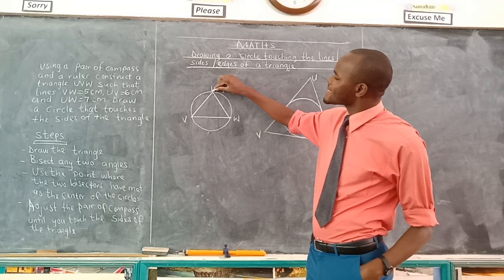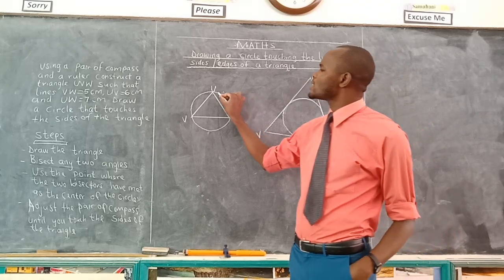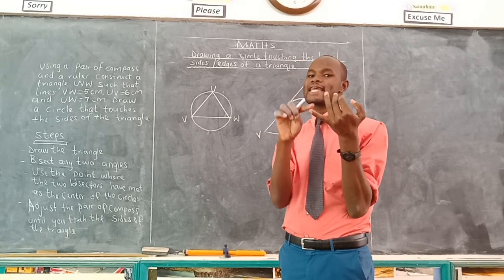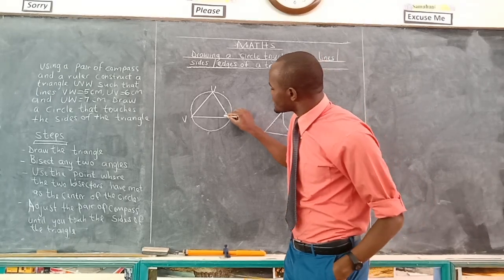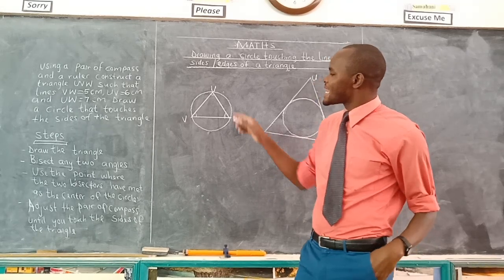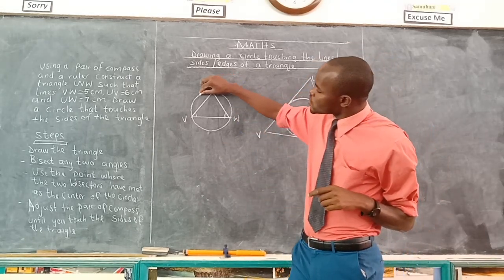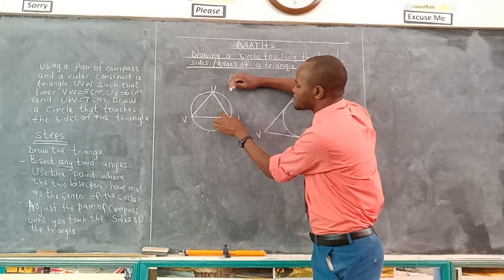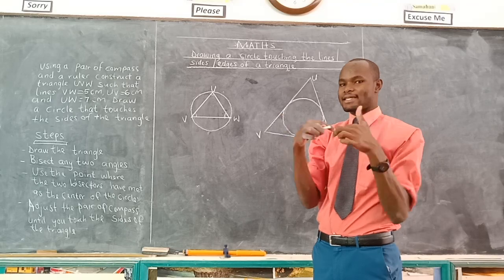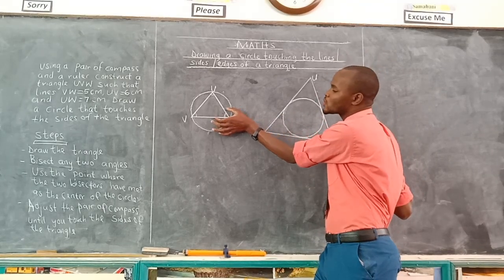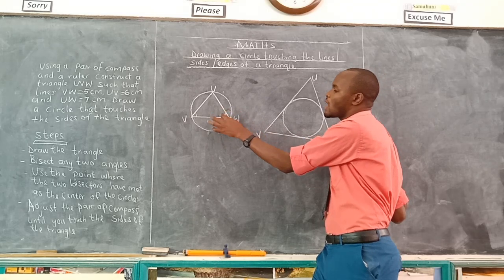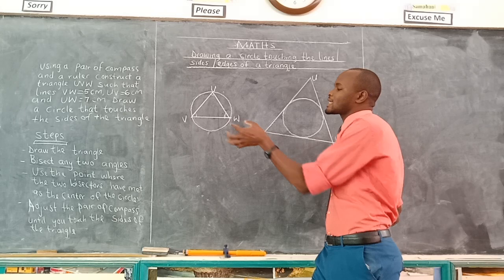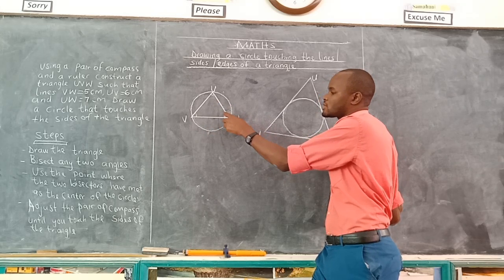If you want to construct a circle touching the vertices, remember the circle is outside. If you compare these two things — that is the angles and the lines — you either bisect the lines or bisect the angles. In this case, if you want to draw a circle touching the vertices, since the circle is outside, you will find that the two lines are outside when you are comparing this angle, and the angles are inside.